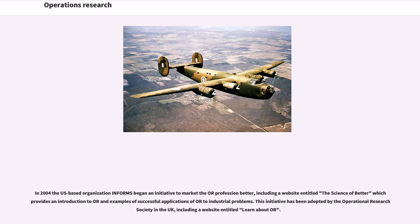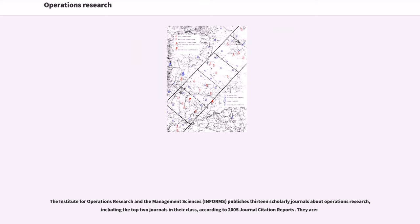In 2004, the U.S.-based organization INFORMS began an initiative to market the OR profession better, including a website entitled The Science of Better which provides an introduction to OR and examples of successful applications of OR to industrial problems. This initiative has been adopted by the Operational Research Society in the U.K., including a website entitled Learn About OR. The Institute for Operations Research and the Management Sciences publishes 13 scholarly journals about operations research, including the top two journals in their class, according to 2005 Journal Citation Reports.